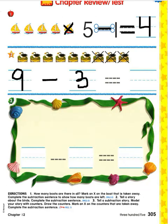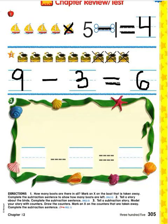This picture shows the subtraction sentence nine take away three. Nine take away three is how many left? How many do you see without x's on it? I see six birds without x's on it. Nine take away three is six.